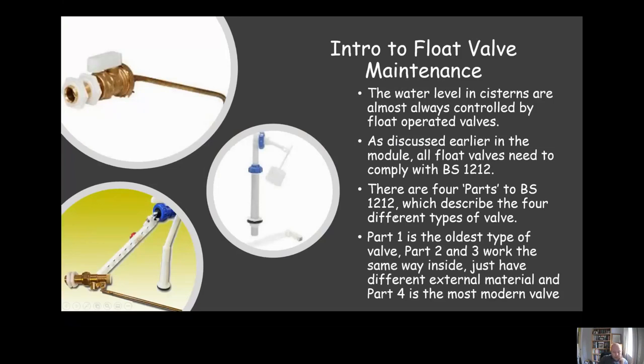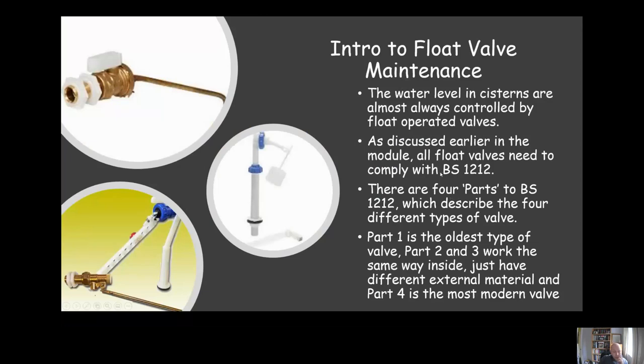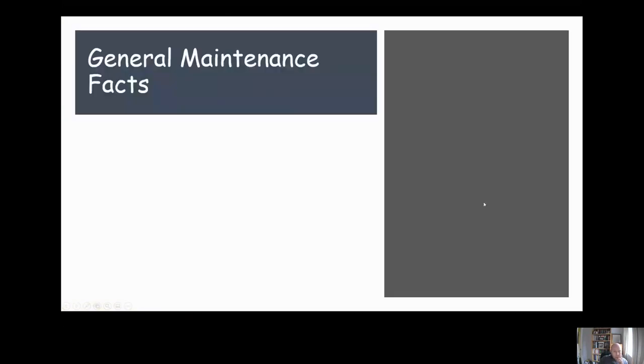There's four parts to BS 1212: part one, part two, part three, and part four. Each of them describes a type of float operated valve. It goes from oldest to newest, with part one being the oldest and part four being the most modern valve.